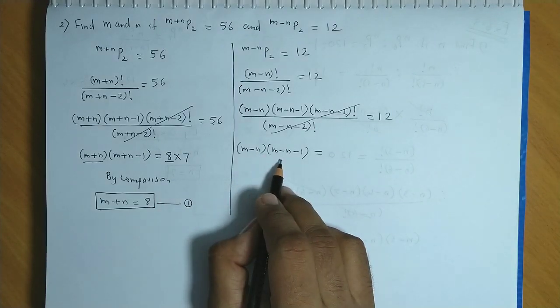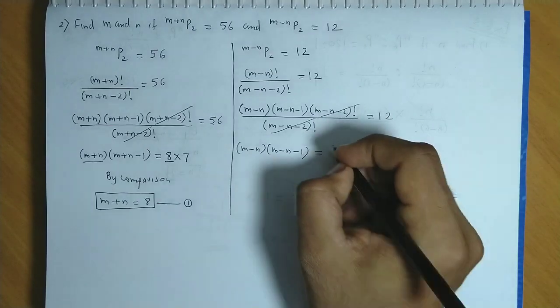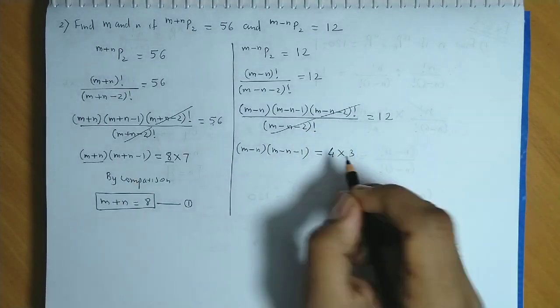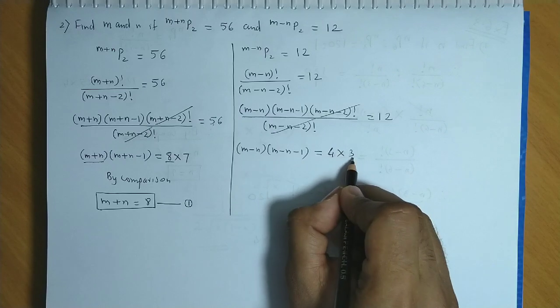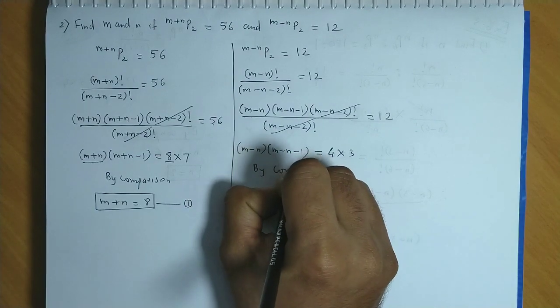So we are left with m minus n into m minus n minus 1 is equal to 12. Now we have two factors, descending order, difference of 1. We can write 12 as 4 into 3, correct? Here also difference of 1 and descending order. So again we could say,